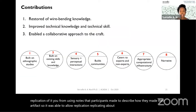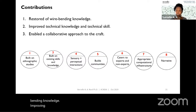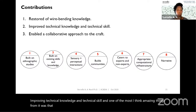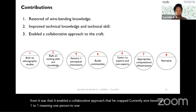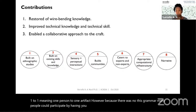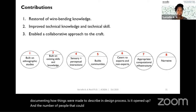This computational crafting tool — this grammar — was able to contribute to repair by restoring wire bending knowledge, improving technical knowledge and skill. One of the most amazing things from it was that it enabled a collaborative approach to the craft. Currently wire bending is one-to-one — one person to one artifact. However, because there was now this grammar, many people could participate by having new social roles in that practice, from documenting how things were made to describing design processes — opening up the number of people that could participate in design at the same time.